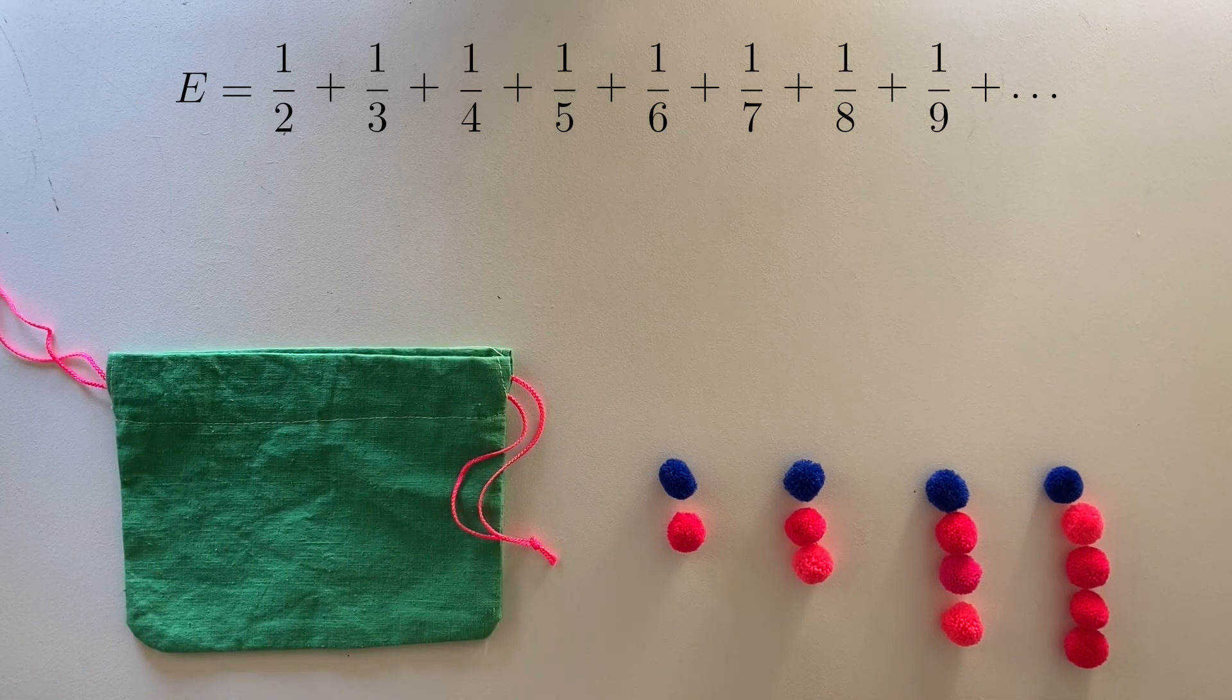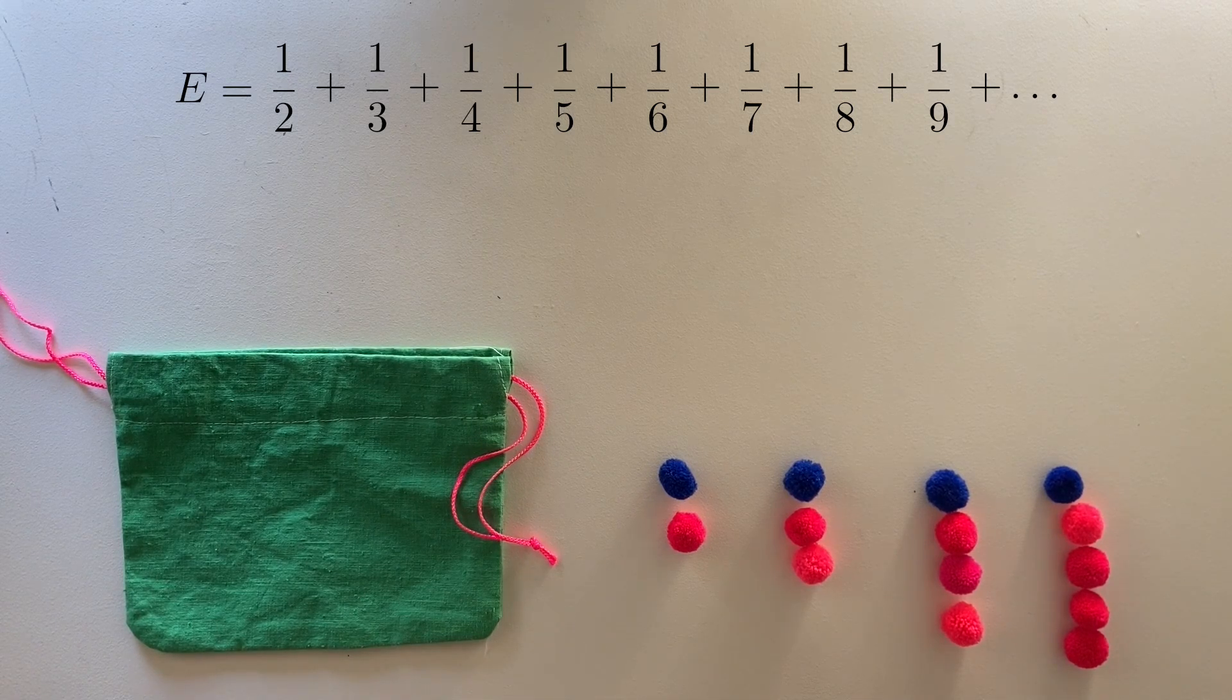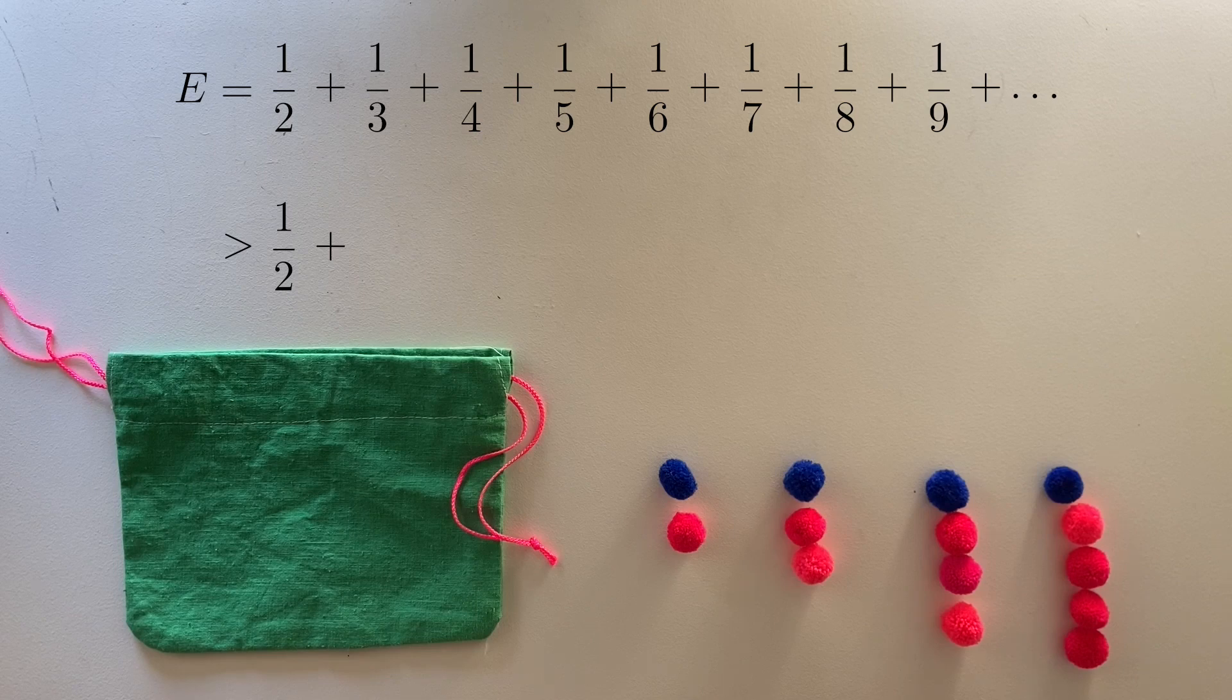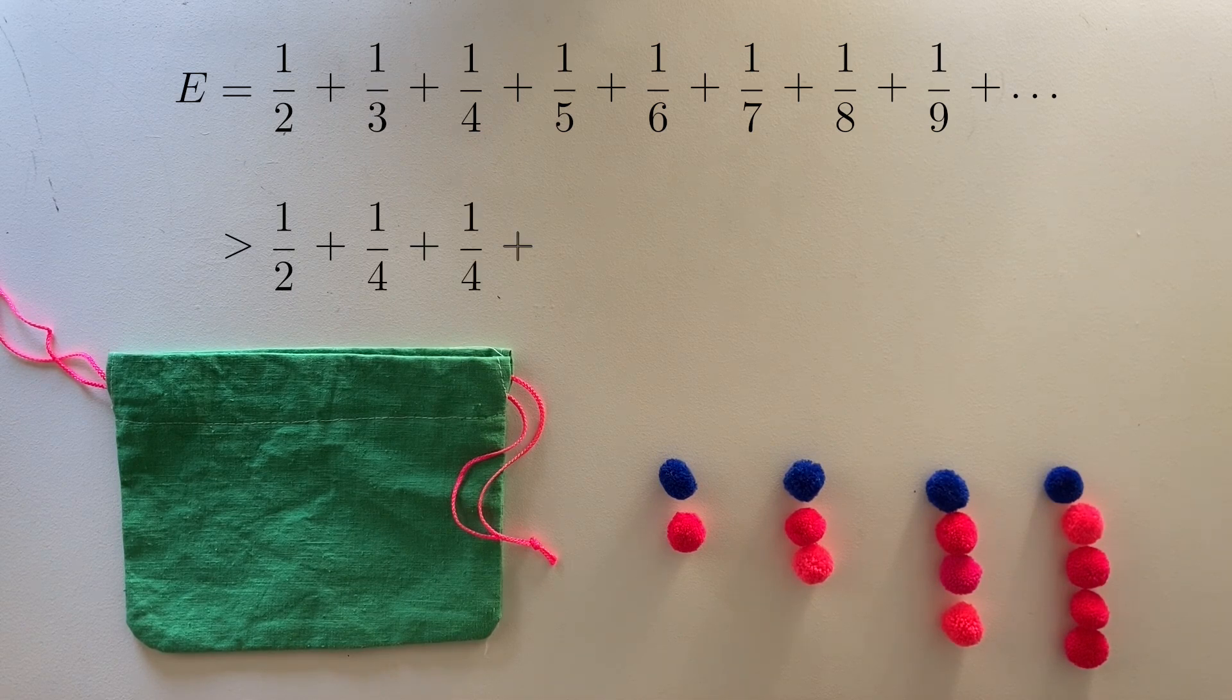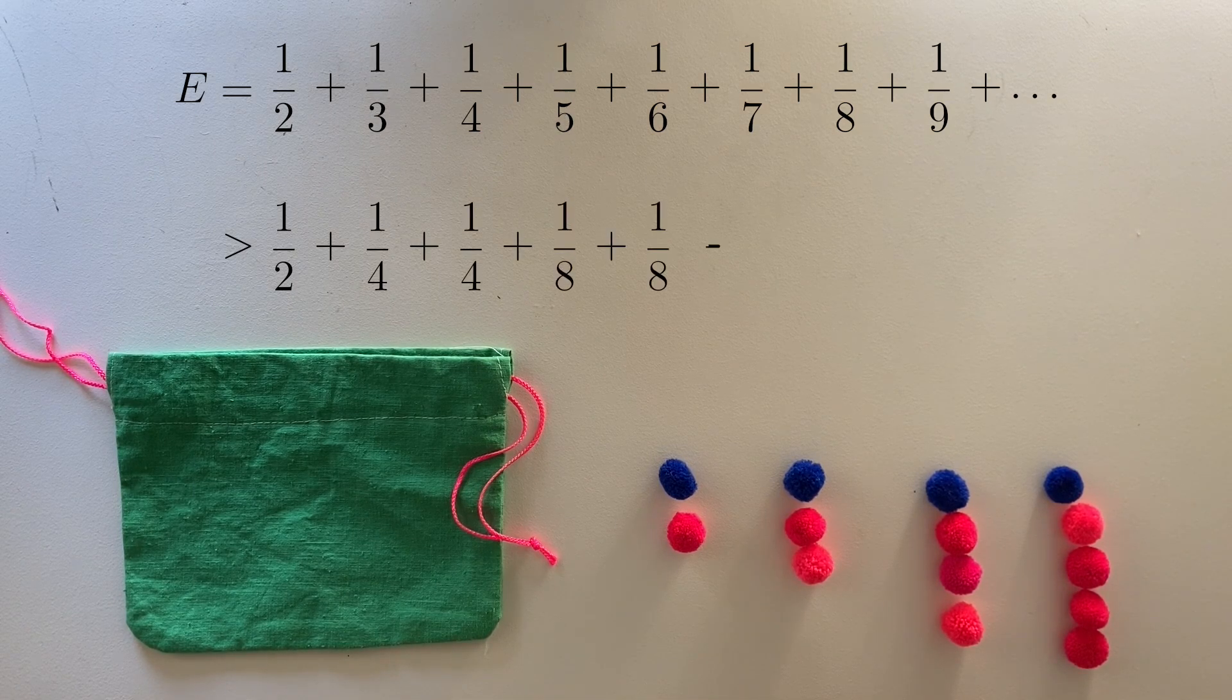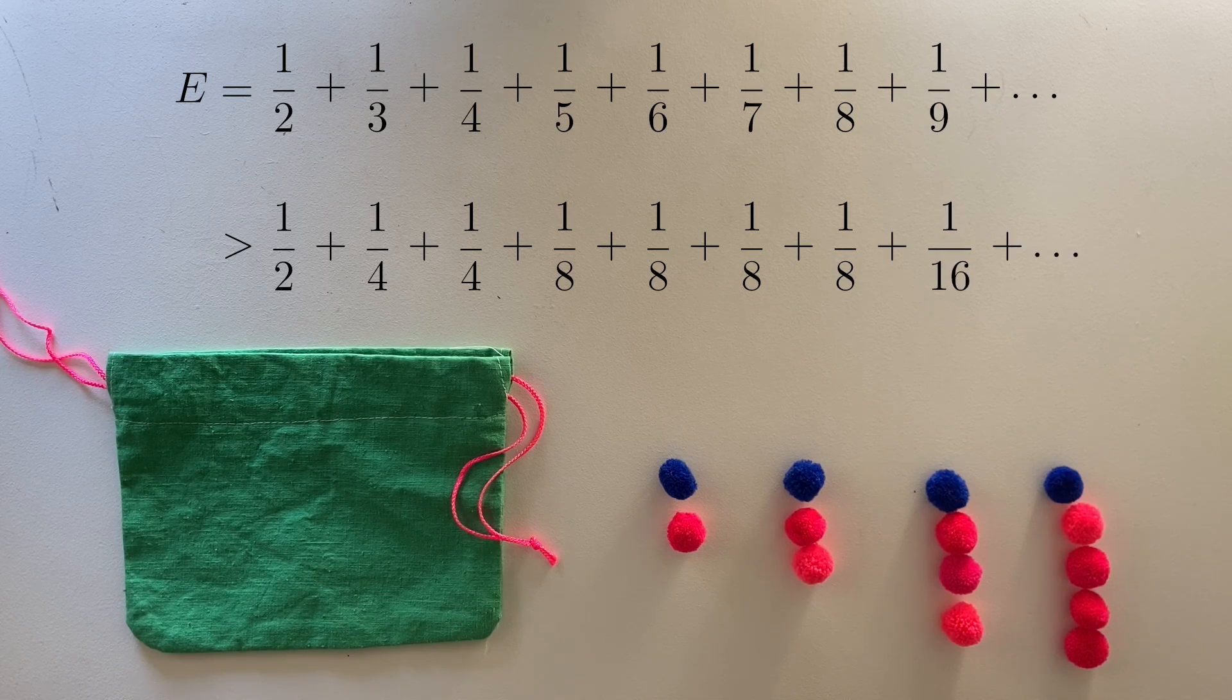But there's a problem. This sum doesn't converge. There are multiple ways to show that this sum is infinite, but the most common is to construct a smaller sum and show that sum is infinite as well. Let's swap out one on three with one on four, then swap out each of five, six, and seven with eight, then do the same for the next few terms of sixteen, and so on.